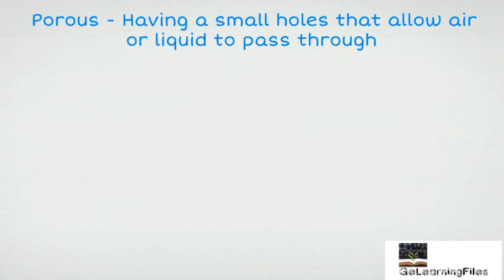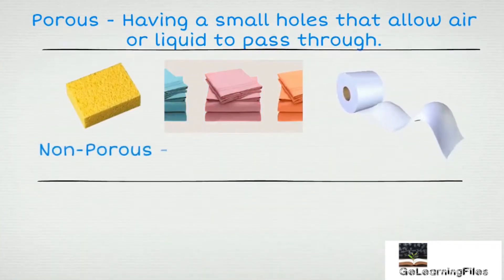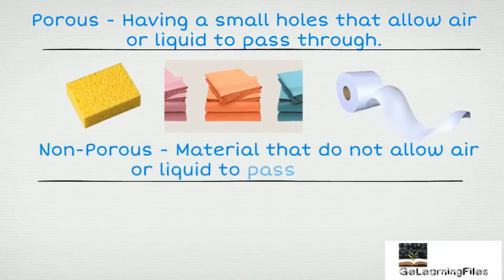Before we start our Activity 1, let's first take a look at the following words. Porous, having small holes that allow air or liquid to pass through. Example, sponge, face towel, tissue paper.